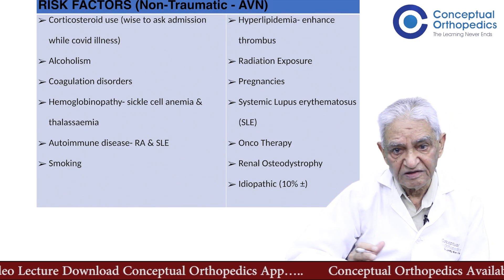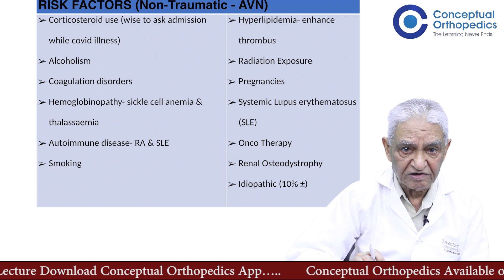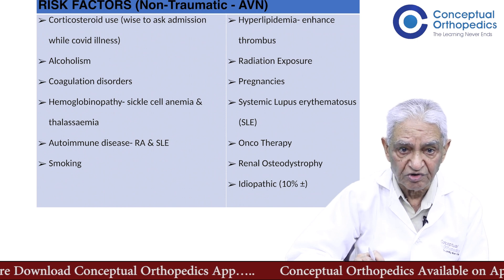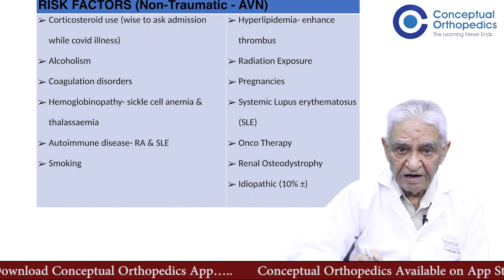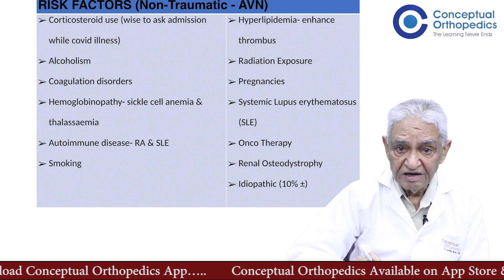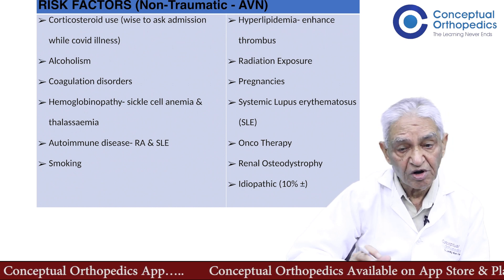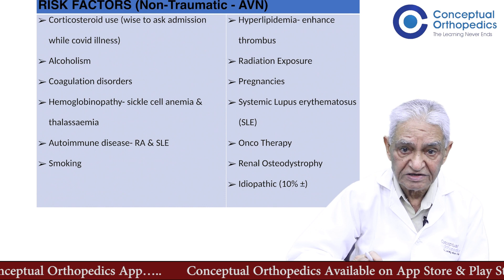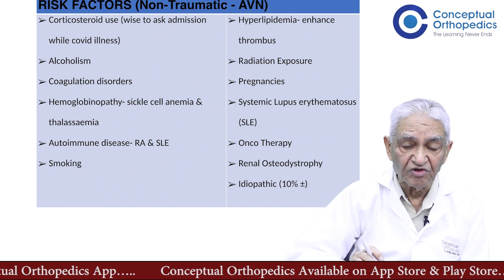What are the risk factors? Common risk factors include corticosteroids, alcoholism, coagulation disorders, hemoglobinopathy, autoimmune disorders, smoking, hyperlipidemia, radiation exposure, pregnancies, rheumatoid disorders, and oncotherapy. In oncotherapy we give not only chemicals but also steroids and radiation. Many of these factors can combine, and one can get AVN without direct injury.